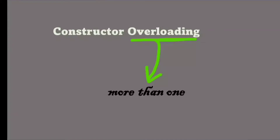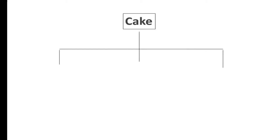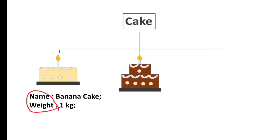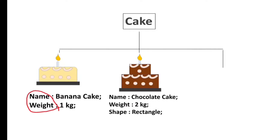The question is: why do we need more than one constructor if a single constructor is enough to initialize an object? So why do we need constructor overloading in Java? Let's understand with an example. Imagine you have a cake shop. A first customer comes in and orders a banana cake of 1 kg. Here, cake has two fields: name of cake and weight of cake.